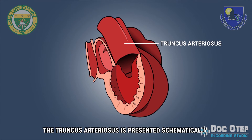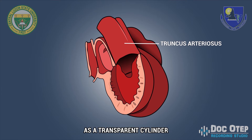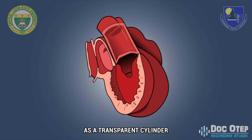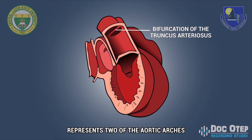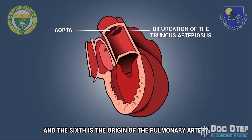The truncus arteriosus is presented schematically as a transparent cylinder. The bifurcation of the truncus arteriosus illustrated here represents two of the aortic arches. The fourth aortic arch forms the aorta and the sixth is the origin of the pulmonary artery.